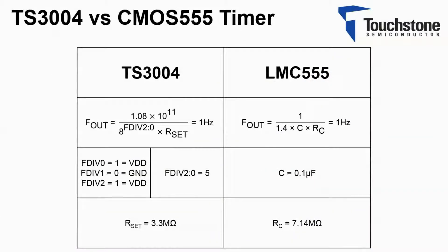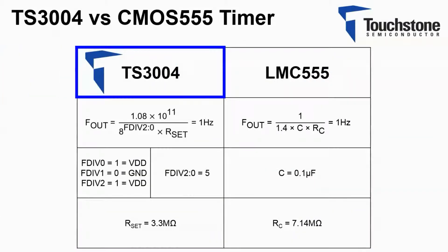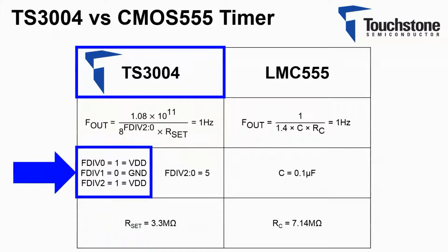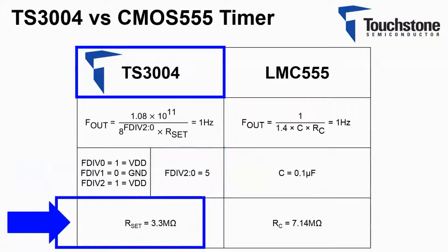First, the TS3004. The equation defining Fout is found on page 7 of the datasheet. Notice, Fout is defined by only one component, the RSET resistor. Setting the frequency divider inputs to the appropriate logic state of 101, or 5, the required RSET resistor value of 3.3 megaohms can be solved for using an output frequency of 1 Hz.